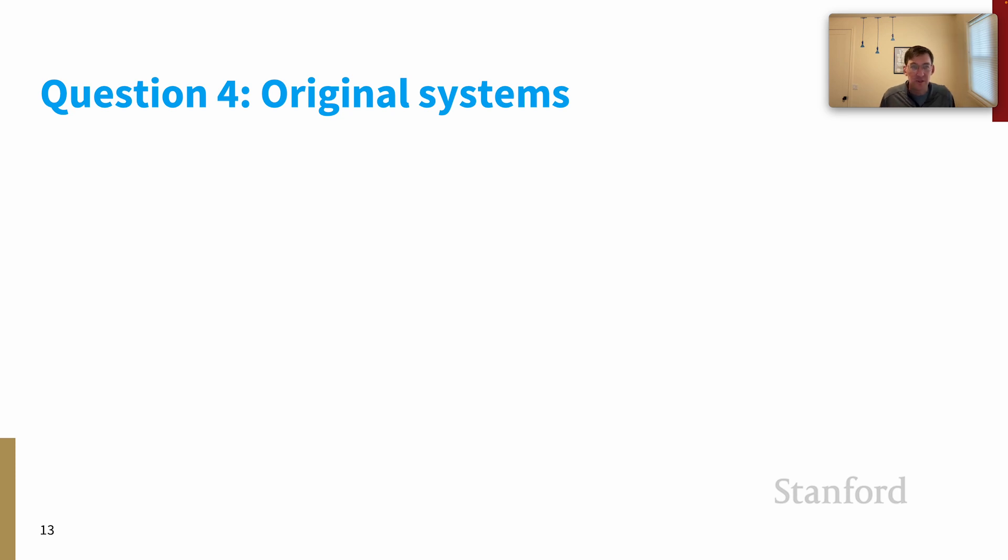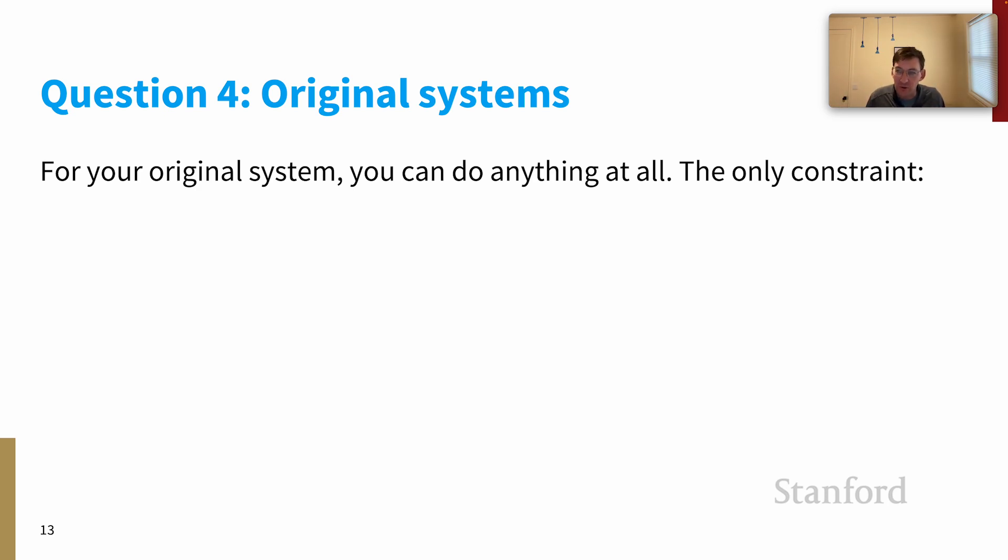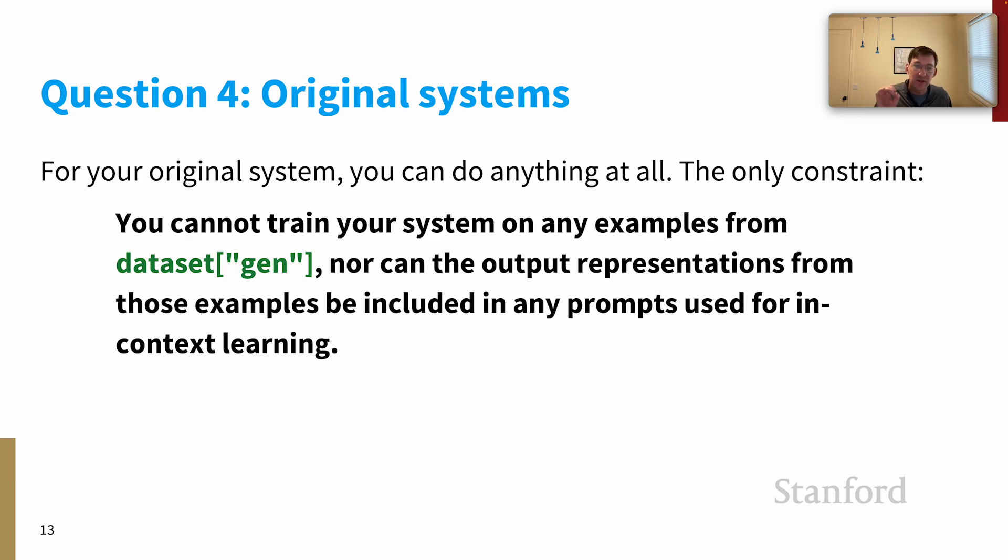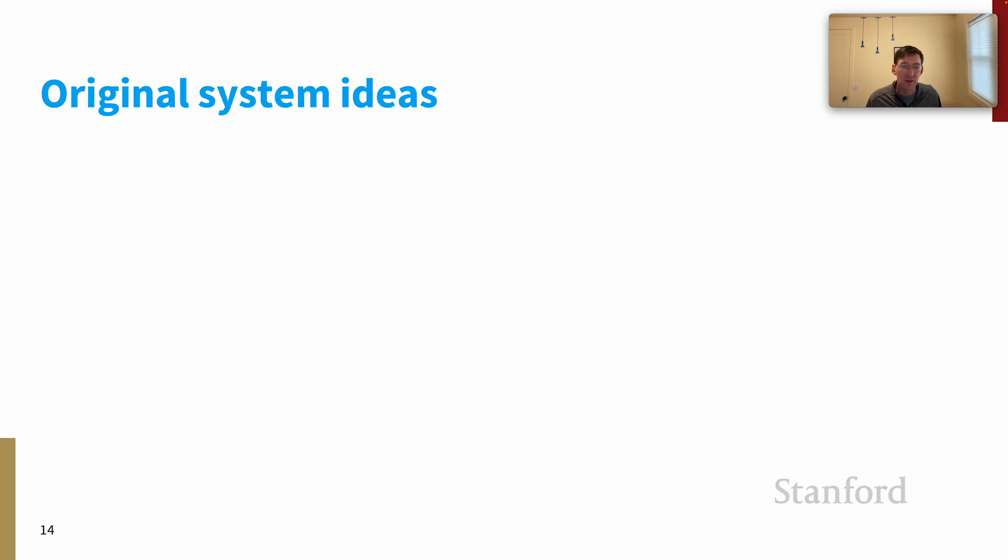Finally, question four, as usual, you're doing your original system. For your original system, you can do anything you want. The only constraint is that you cannot train your system on any examples from the generalization splits, nor can the output representations from those examples be included in any prompts that you use for in-context learning. The idea here is that we want to preserve the sanctity of the generalization splits to really get a glimpse of whether or not systems are generalizing in the way that we care about.